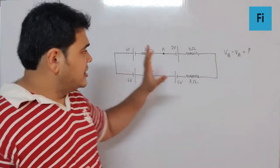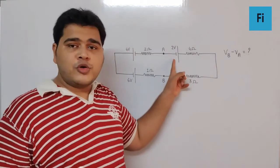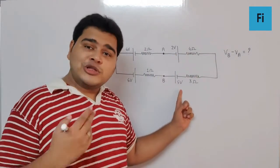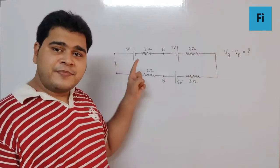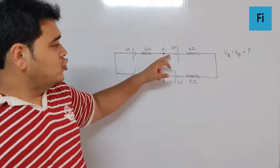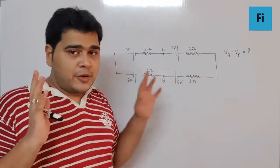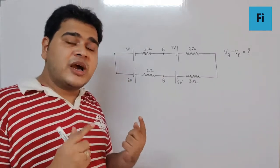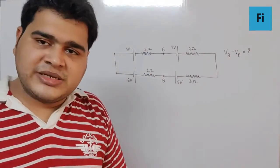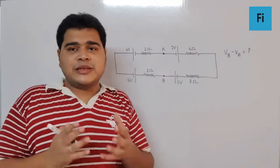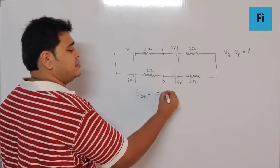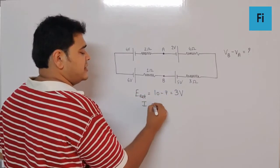Similarly, the 2V battery wants current to flow anti-clockwise, whereas the 5V battery wants current to flow clockwise. So 2V and 5V are in series and same mode, adding up to 7V. Now, 10V wants current anti-clockwise and 7V wants current clockwise — 10V wins, so the net EMF is 10 minus 7 = 3V, with current flowing anti-clockwise.